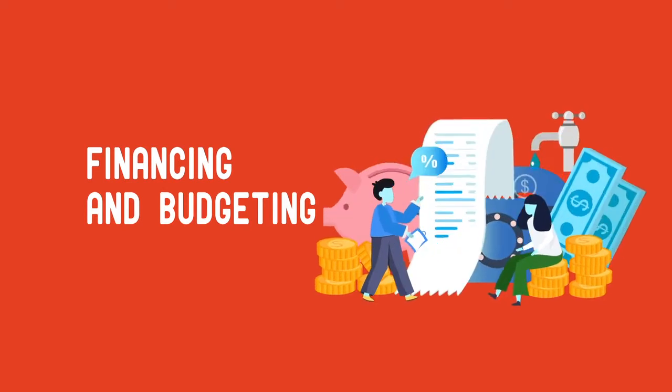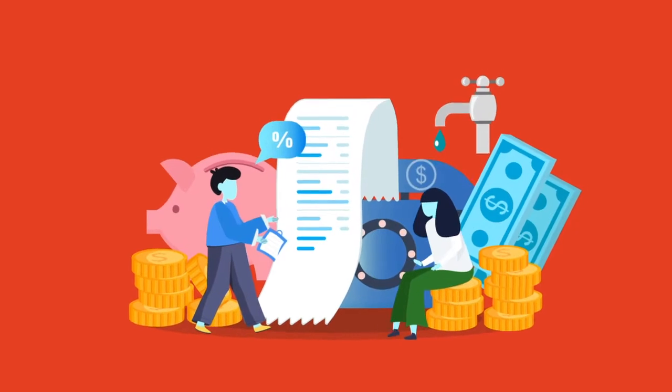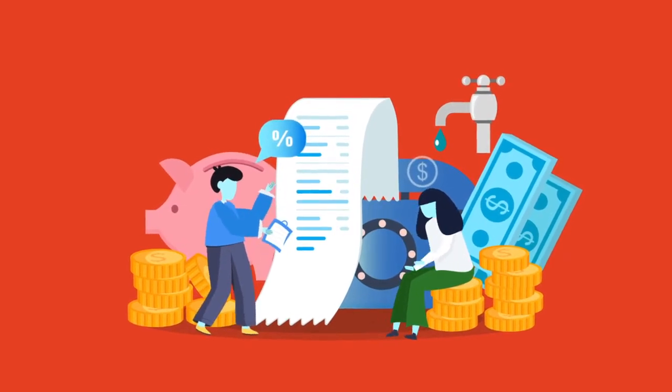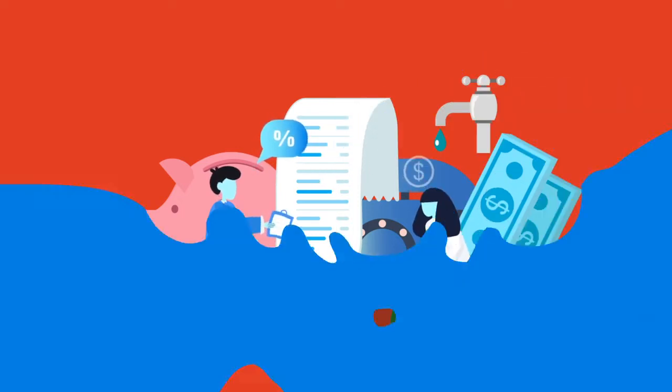Third component is financing and budgeting, which tracks where money comes from and where it goes. Governments and service providers can raise funds from different sources and allocate them responsibly to reach everyone with services.